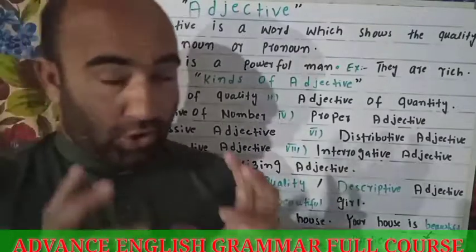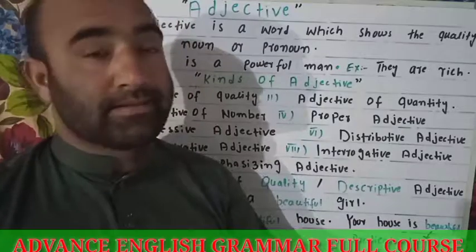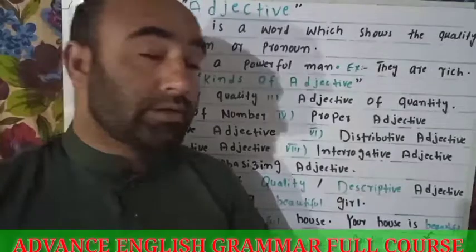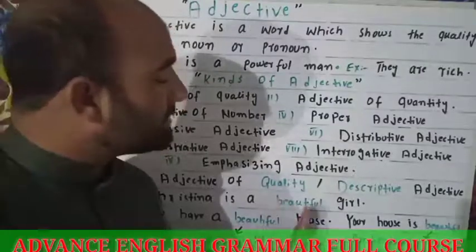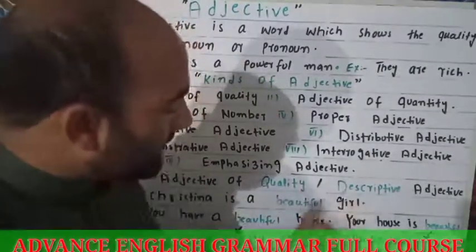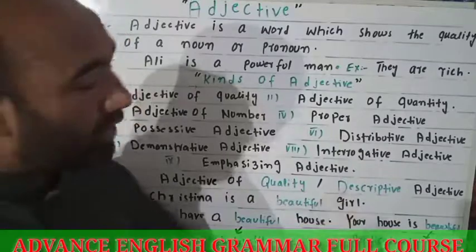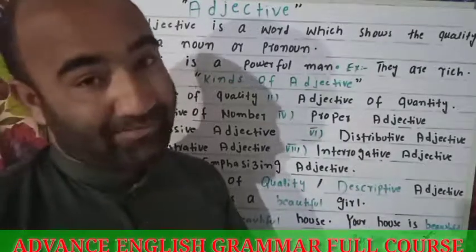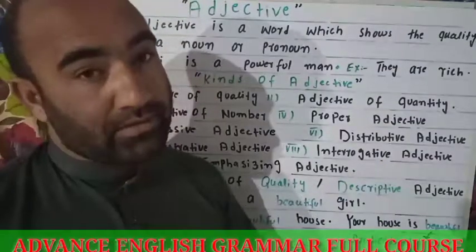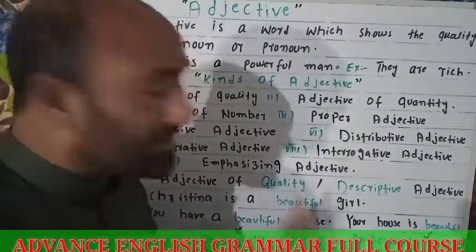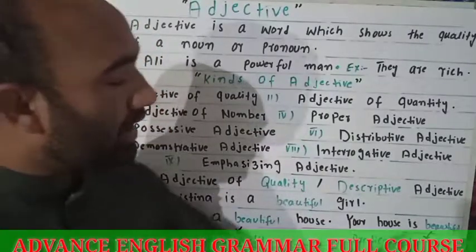Whenever we are talking about the state or quality of a person, place, or thing, we use adjective of quality. For example: 'Christina is a beautiful girl' — it tells us about the quality of the noun Christina. Another example: 'You have a beautiful house' — it modifies a noun, coming before it. Also: 'Your house is beautiful' — here the adjective comes after the verb.